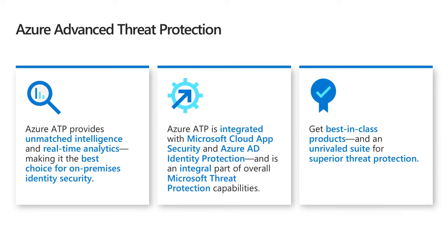To wrap things up: Azure ATP has unique data sources and analysis beyond Windows events, including event tracing data, Active Directory information, and deep analysis on network traffic in real time on those domain controllers. Analytics are applied to those data sources, making the information actionable so you're not sifting through hundreds or thousands of events. This allows you to clearly determine where the attack may be occurring in the environment and helps you pinpoint and prioritize. Azure ATP is also deeply integrated with Microsoft Threat Protection — with Cloud App Security, Office 365 ATP, and Defender ATP — giving you a full scope of the threat across the environment.